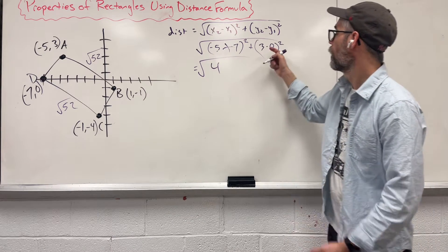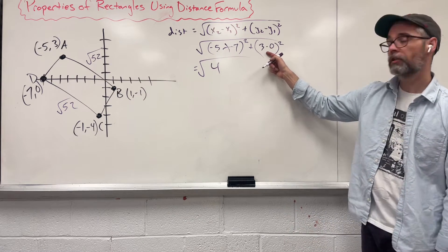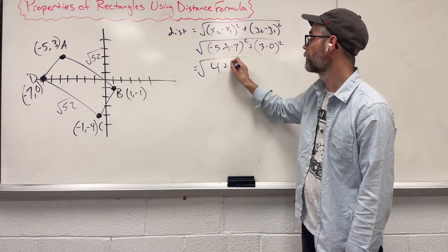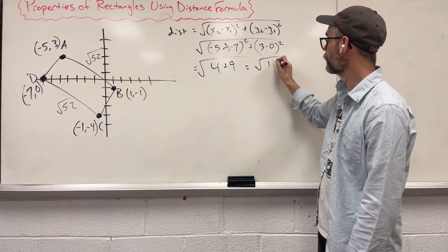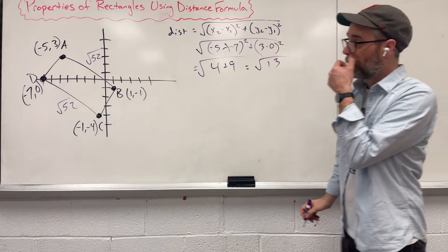We over here, second parenthesis is just 3. 3 squared is 9. Leaving us with square root of 13. That's good.